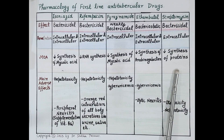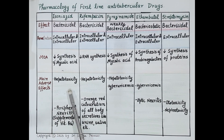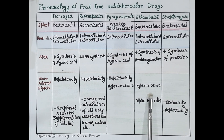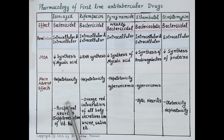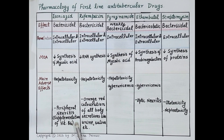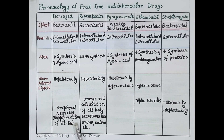Regarding adverse effects: isoniazid, rifampicin, and pyrazinamide are hepatotoxic. Pyrazinamide and ethambutol can produce hyperuricemia — increased concentration of uric acid in the blood — which can cause gout. Another very important adverse effect of isoniazid is peripheral neuritis, that is inflammation of the peripheral nerves, which can cause numbness, loss of sensation, and mental disturbances.